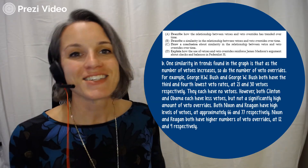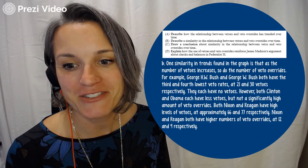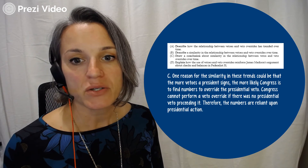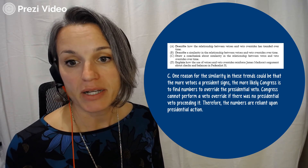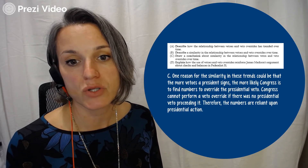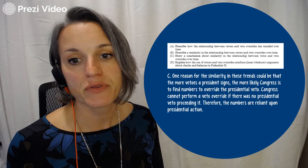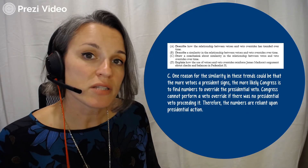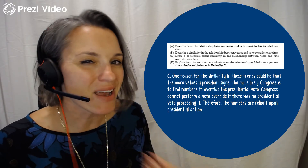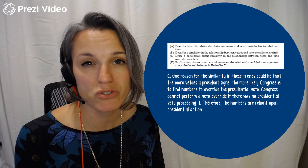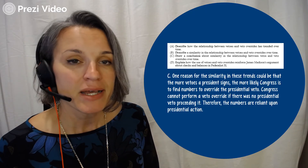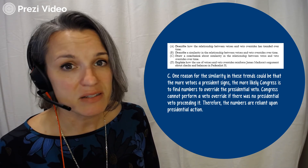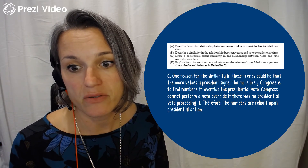For the C point conclusion: one reason for the similarity in these trends could be that the more vetoes a president signs, the more likely Congress is to find the numbers to override the presidential veto. Congress cannot perform a veto override if there was no presidential veto preceding it — therefore the numbers are reliant upon presidential action. That's a logical conclusion drawn directly from the data set, without requiring any outside information to support it.